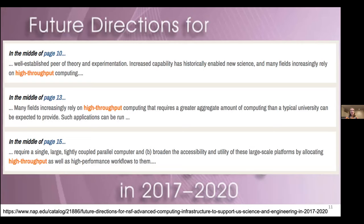The report also concluded that we need to broaden the accessibility and utility of investments in large-scale computing to make sure that high-throughput as well as high-performance workloads are able to run on them. One of the ways you can do this even now, even with a traditional HPC system, is through contributing it to the Open Science Grid and connecting your researchers.